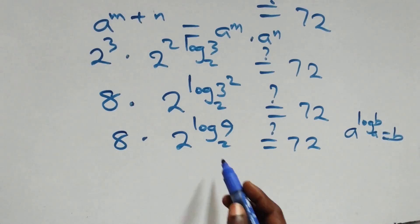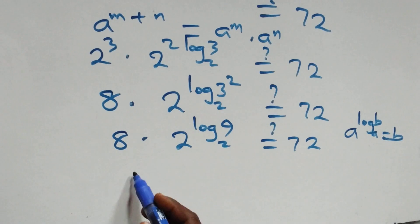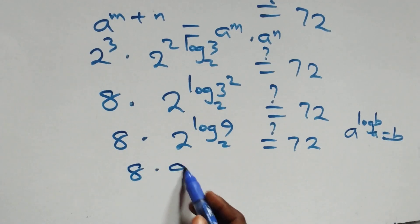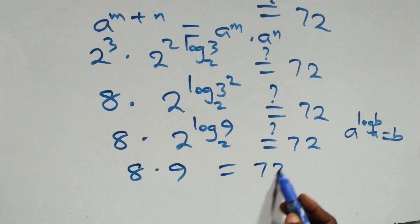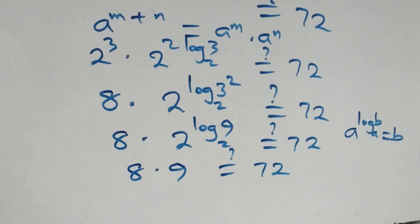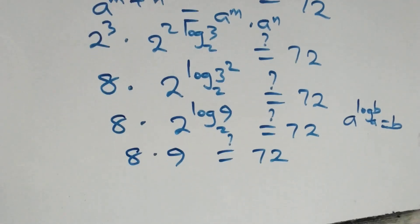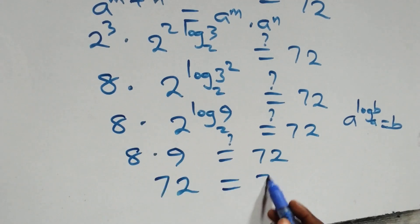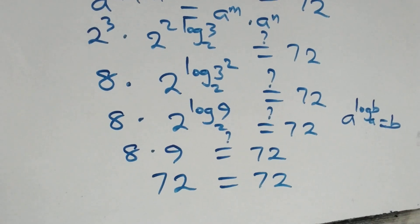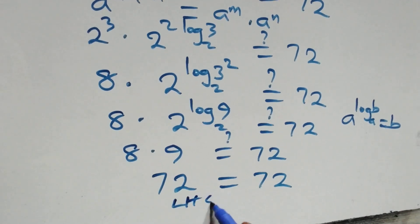This simplifies to 8 times 9, which equals 72 on this side. And indeed, 8 times 9 gives us 72, which equals 72 on the right hand side. Therefore, the left hand side equals the right hand side.